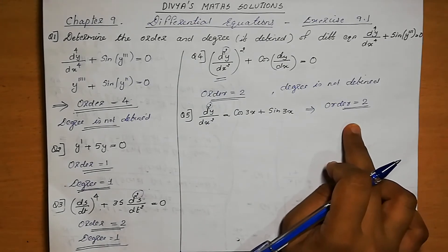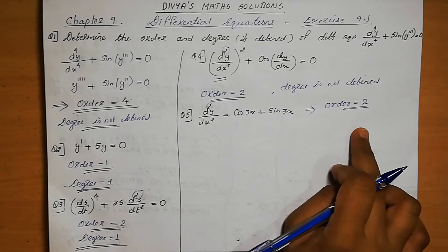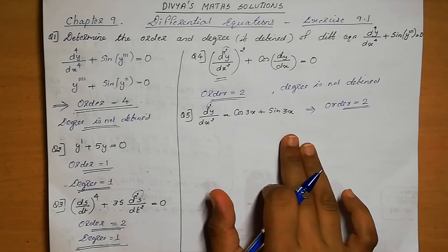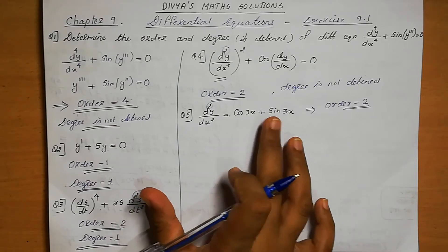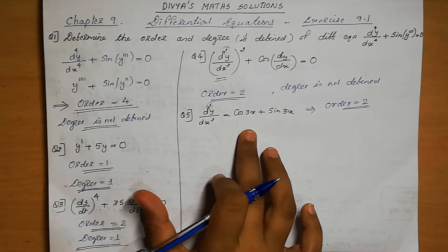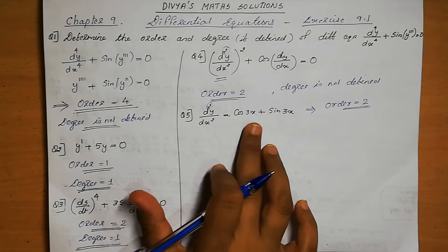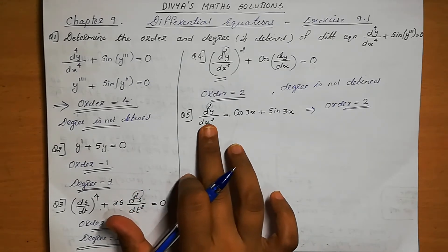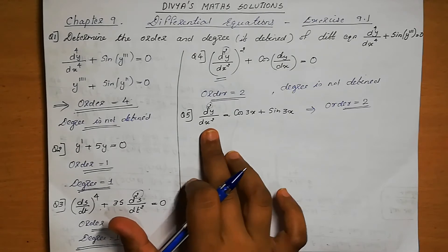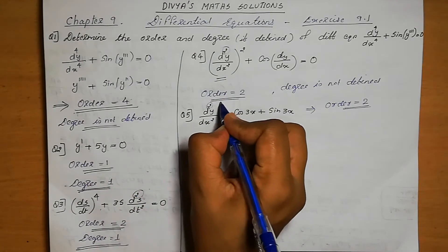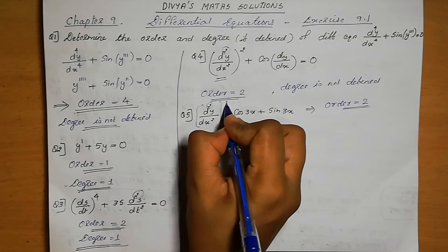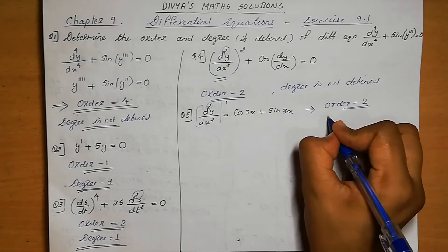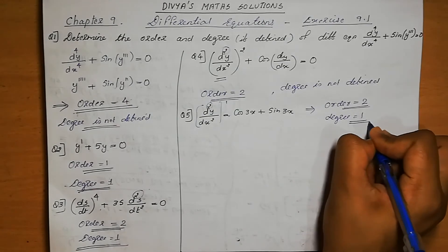The order is 2. Next, we check whether this is in the form of a polynomial equation — and it is. We then check the power of the highest order derivative, d²y/dx², which has power 1. So the degree equals 1.